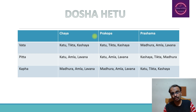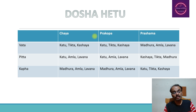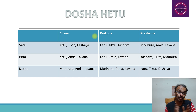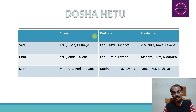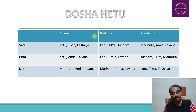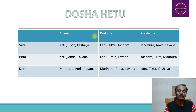Pacification of Pitta Dosha may happen through consumption of Kashaya, Tikta, and Madhura Rasa. Similarly, accumulation as well as provocation of Kapha Dosha are possible by excessive consumption of Madhura, Amla, and Lavana Rasa substances. Whereas mitigation or decrease of vitiated Kapha Dosha is possible by the consumption of Katu, Tikta, and Kashaya Rasa substances.